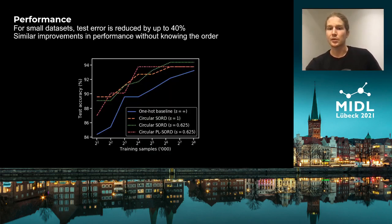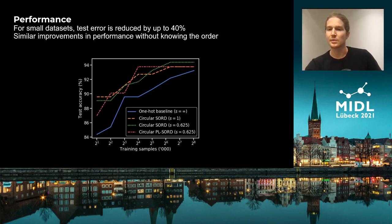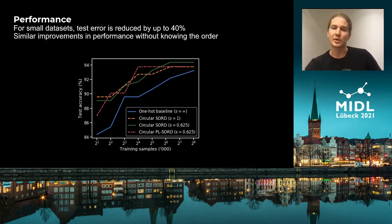When we compare these approaches to a one-hot encoding baseline, we see improvements in performance on a range of dataset sizes, which is most significant for small datasets. And the same is true when we learn these relations between classes in parallel during the training process.